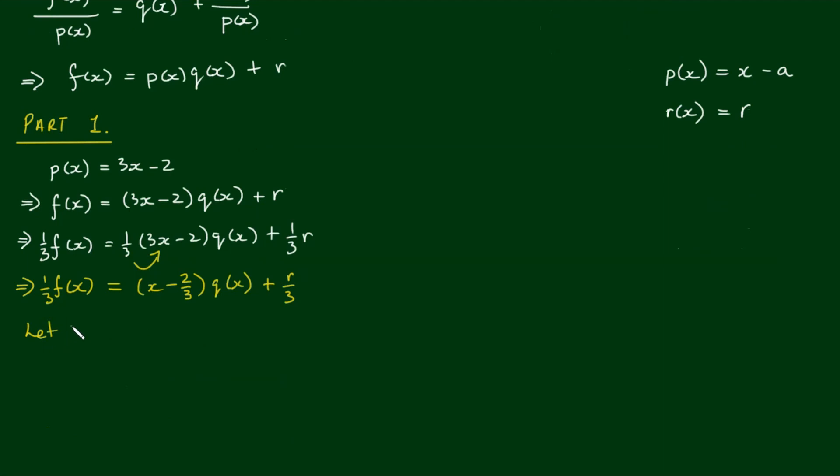So completing it, we have 1 third of f(x) is equal to x minus 2 thirds by the q(x) plus r on 3. What I'm going to do now is to let big F(x), capital F(x), is equal to 1 third of small f(x). And I'm going to let capital R equals small r on 3. So the expression becomes more familiar. So we have capital F(x) is equal to x minus 2 thirds by the q(x) plus r. So capital F(x) being equal to 1 third of f(x) is equal to 1 third times ax cubed minus 8x squared minus 9x plus b. So if we take the 1 third into the brackets here, we get ax cubed on 3 minus 8x squared on 3 minus 9x on 3 plus b on 3. 9 on 3 simply reduces to 3 of x.